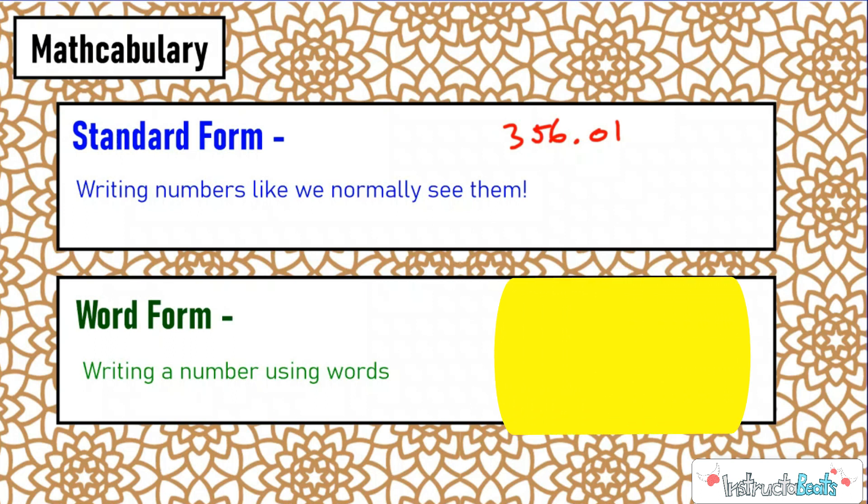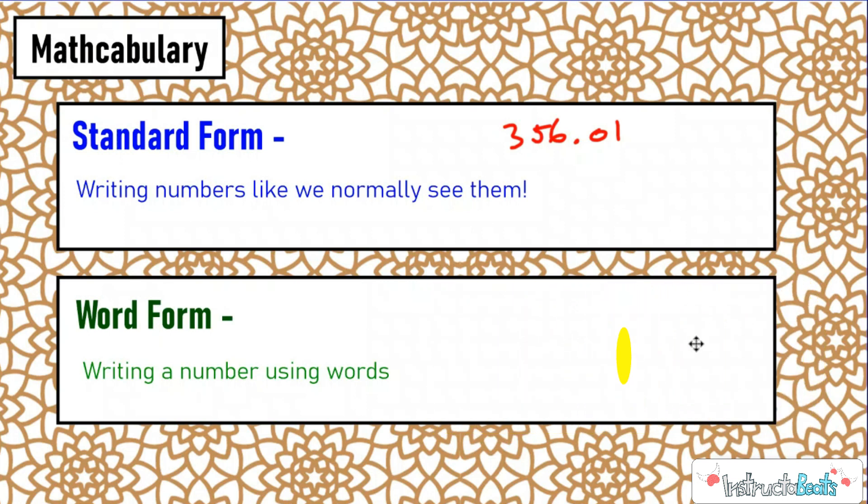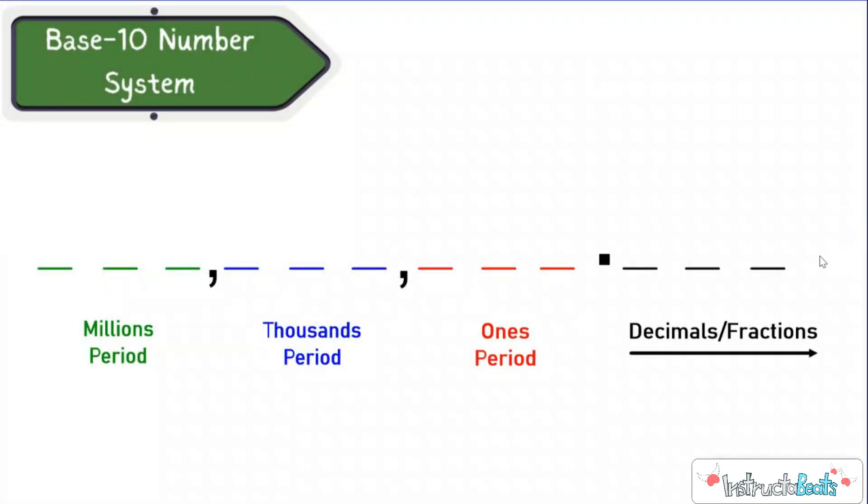And here is the main rule. You write it like you say it. That's all you gotta do. You write it like you say it, but you do have to be able to say it correctly. So let's talk about how we say numbers correctly.